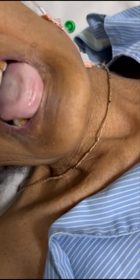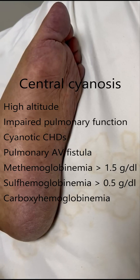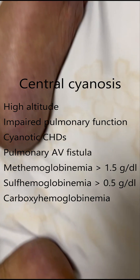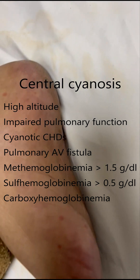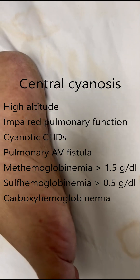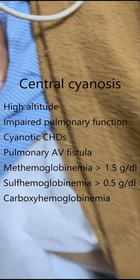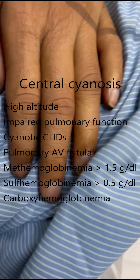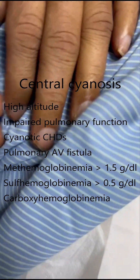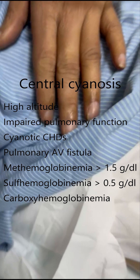The other type is central cyanosis, which is because of decreased arterial oxygen saturation. This occurs in conditions like high altitude, pulmonary impairments such as alveolar hypoventilation and ventilation-perfusion mismatch, or when the patient has a cyanotic congenital heart disease or pulmonary AV fistula.